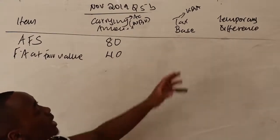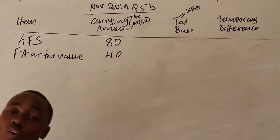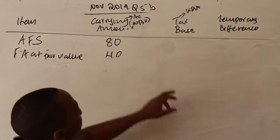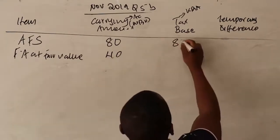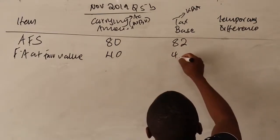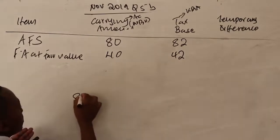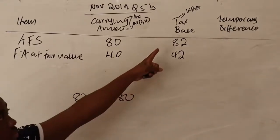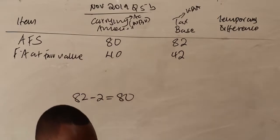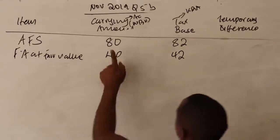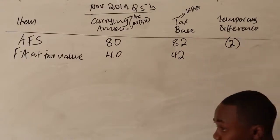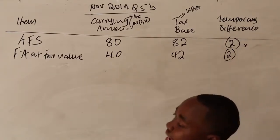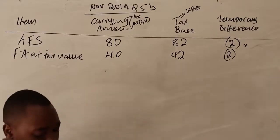Since both assets had reported losses, the accountant has already adjusted. The original cost was 88 for available-for-sale (80 + 8) and 48 for FVTPL (40 + 8). So tax base for available-for-sale = 88, temporary difference = 80 minus 88 = negative 8 (deductible). Similarly for FVTPL. Since available-for-sale is subject to special deferred tax treatment like PPE, it will be treated separately.